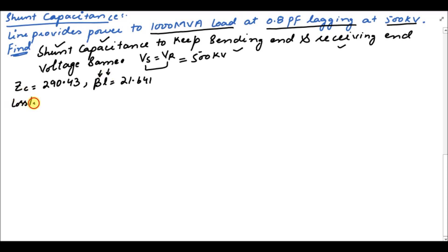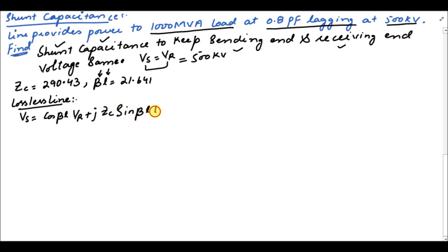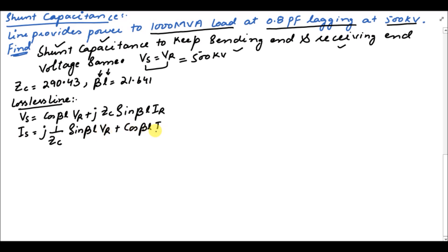We know that for the lossless line, Vs the sending end voltage is equal to cos(beta·l)·Vr plus j·Zc·sin(beta·l)·Ir. Similarly, the sending end current is equal to j·(1/Zc)·sin(beta·l)·Vr plus cos(beta·l)·Ir.